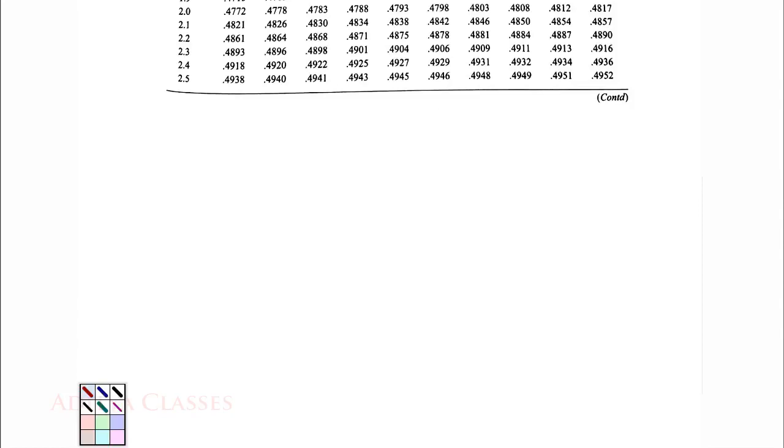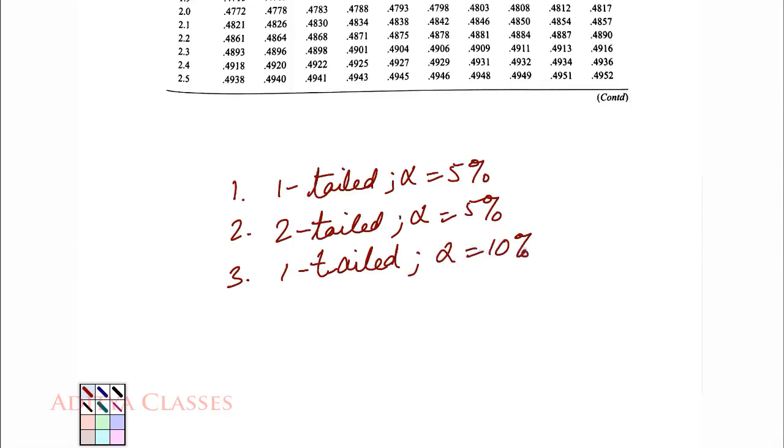Let us create certain questions. First question, it could be 1 tailed and alpha is equal to 5%. N is irrelevant over here in Z test, degrees of freedom are only relevant in T test. Here we do not consider them. Then it could be 2 tailed, alpha being 5%. For practice sake, we will take 1 tailed, alpha being 10%. For practice sake, we will again take 2 tailed with alpha being 10%. And last one we will take 1 tailed, alpha being 2.5%.